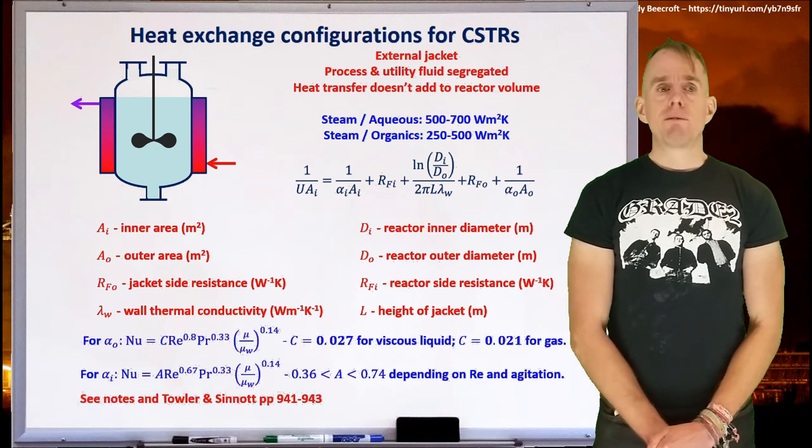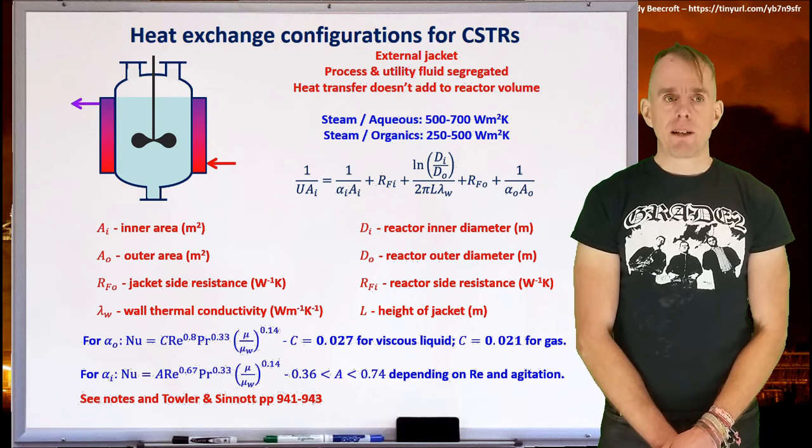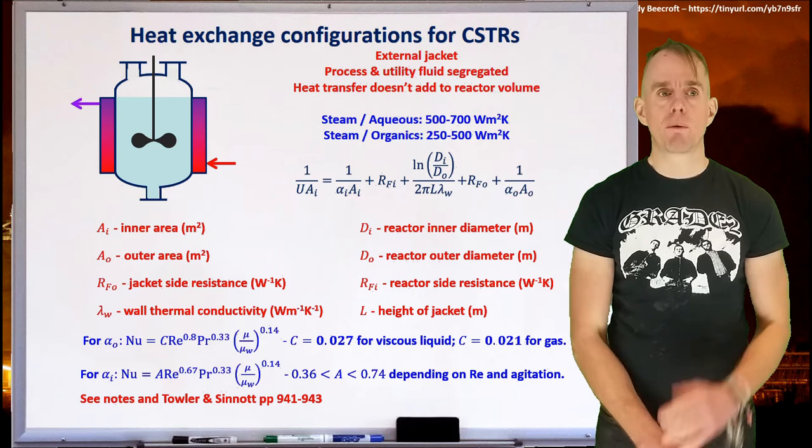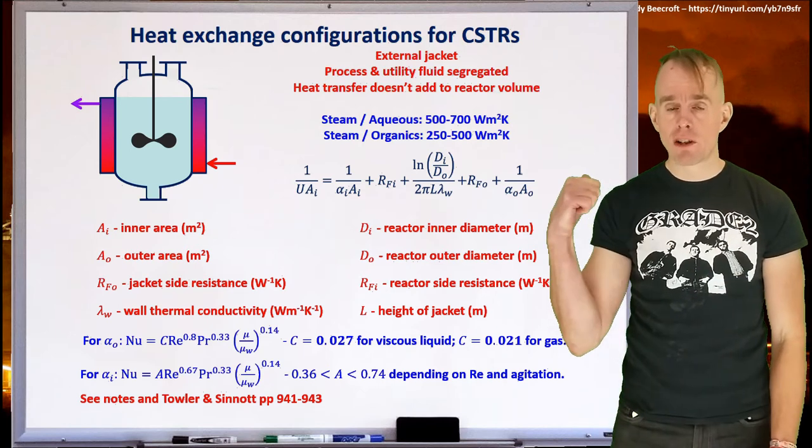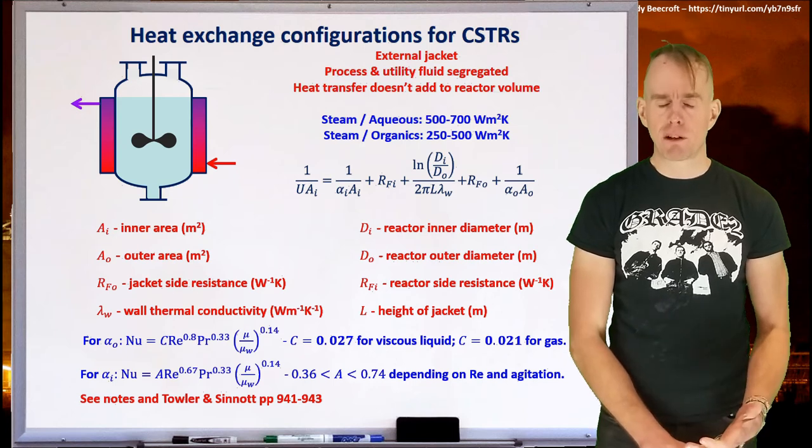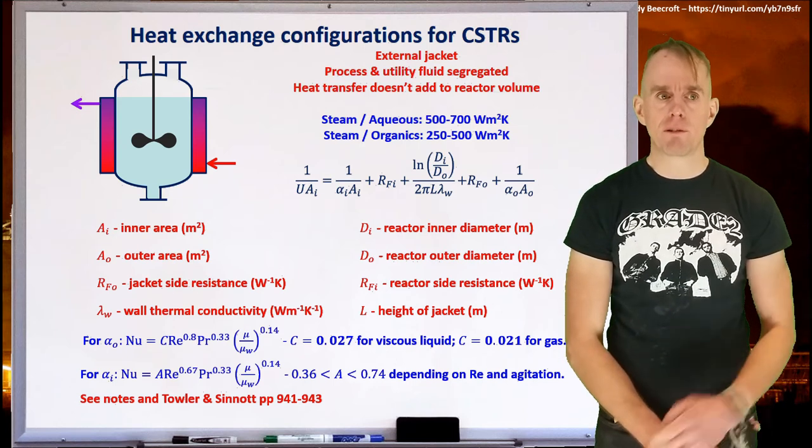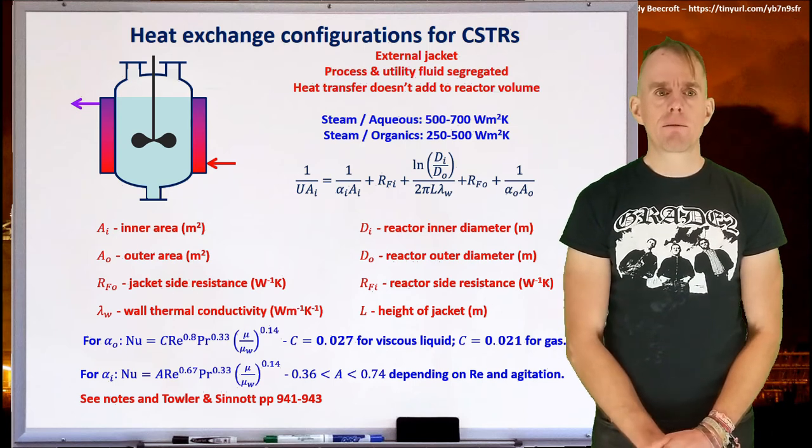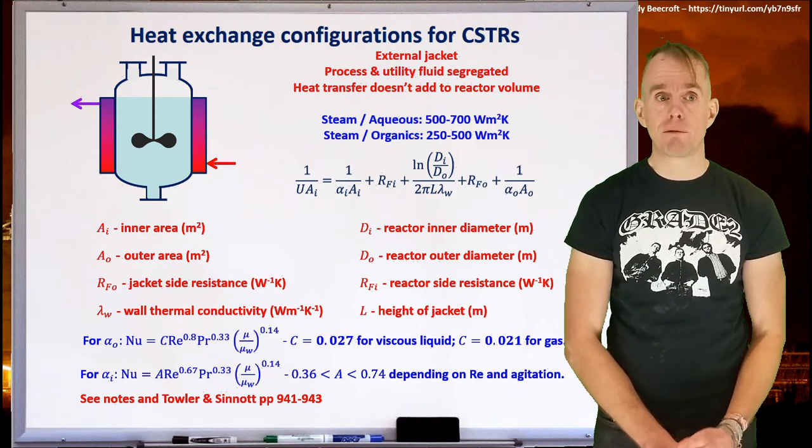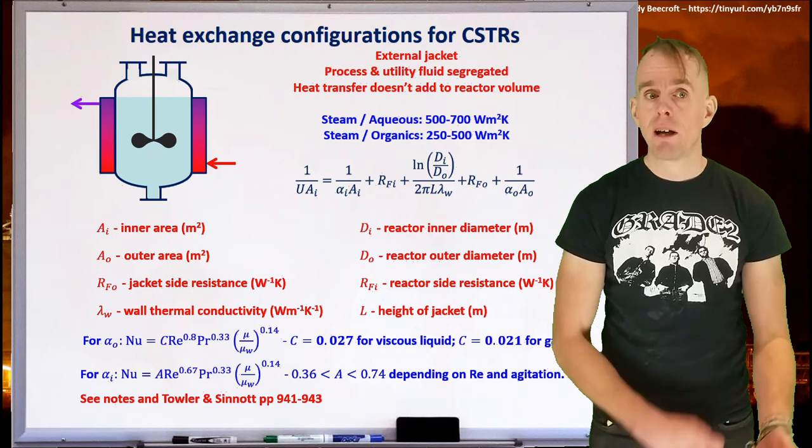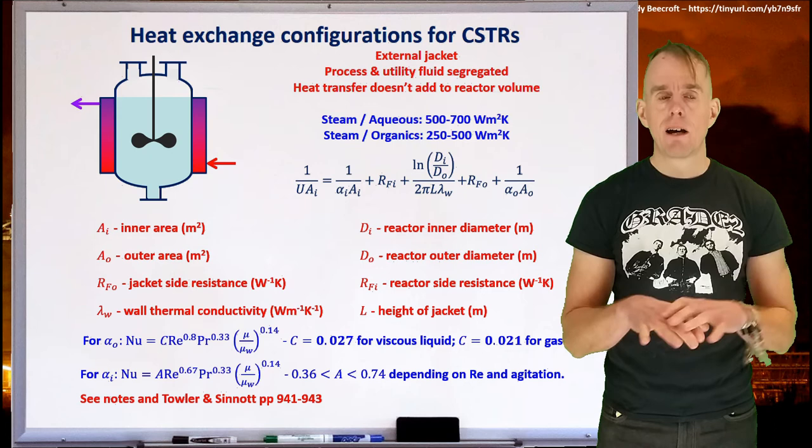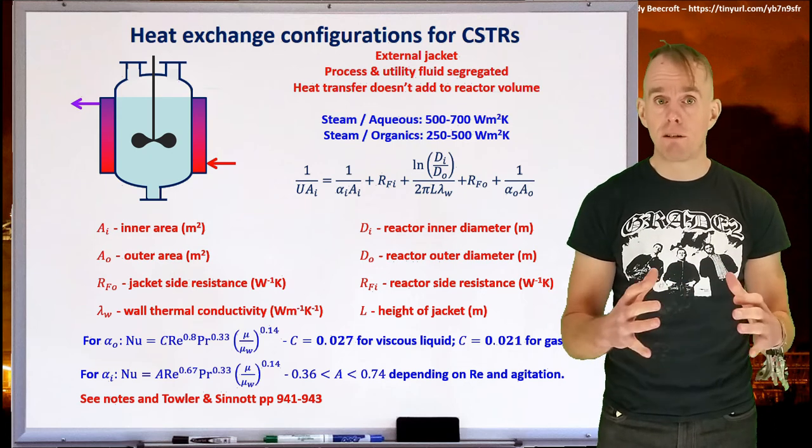Now, there are various correlations you can use to find out what your film heat transfer coefficients are. So for example, for viscous liquids, there's a correlation here, a Nusselt number correlation, that gives you your film heat transfer coefficient, which is alpha zero. And you'll find that the constants in this depend on the type of reacting medium you've got, varying from 0.027 for a viscous liquid to 0.021 for a gas. So relatively easy to get a rough approximation because C doesn't vary a great deal.